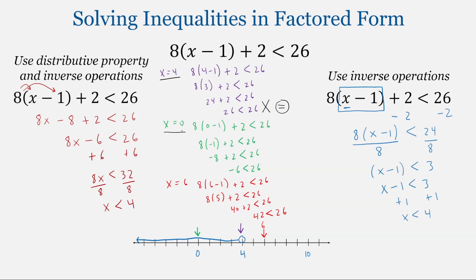Testing x equal to 0, that should be a solution, and we end up with negative 6 less than 26 — that's a true statement. Testing x equal to 6, which is not a solution, we end up with 42 less than 26, which is not true. That is what we expect when we test a number that is not a solution to the inequality.